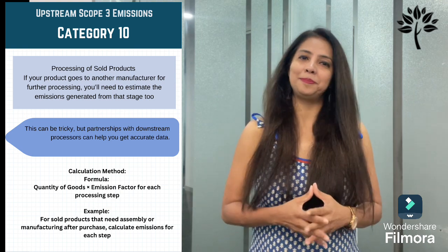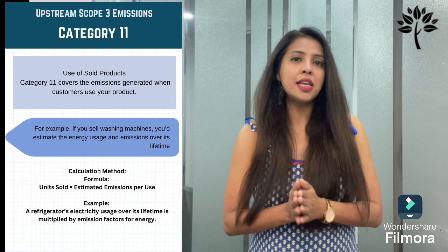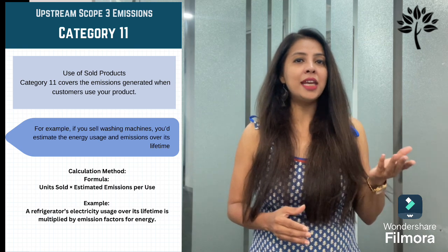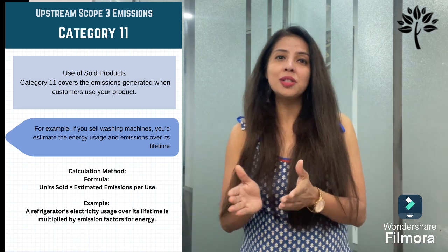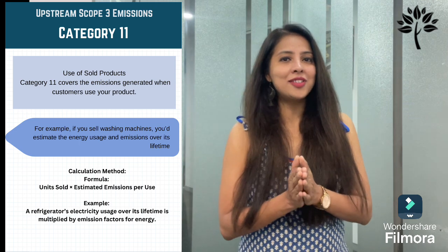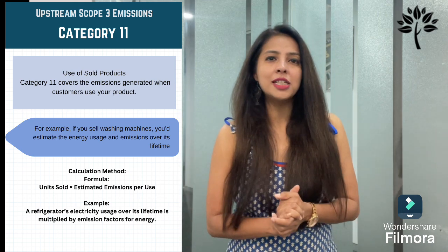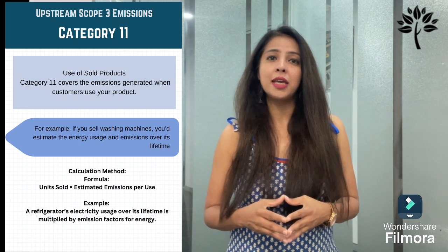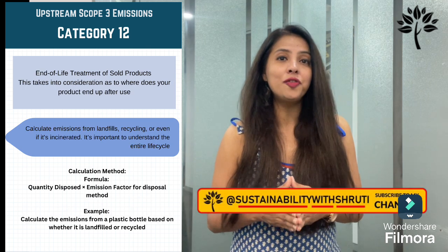Category 11 is use of sold products — covering the emissions generated when customers use your product. For example, if you sell washing machines, you estimate the energy usage and emissions over its lifetime. The calculation method is: units sold × estimated emissions per use. Activity data includes quantity of products sold, estimated lifetime, and usage patterns. Emission factors are based on energy consumption per unit of product. For example, a refrigerator's electricity usage over its lifetime is multiplied by the emission factor for energy consumption.